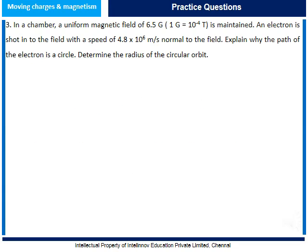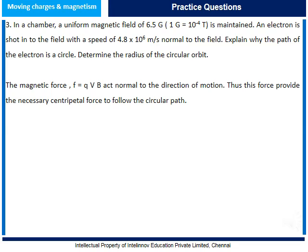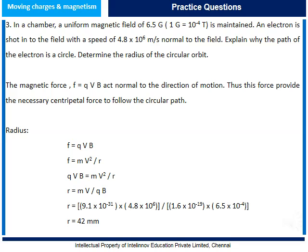Question 3: In a chamber, a uniform magnetic field of 6.5 G (where 1 G = 10⁻⁴ Tesla) is maintained. An electron is shot into the field with a speed of 4.8 × 10⁶ m/s, normal to the field. Explain why the path of the electron is a circle and determine the radius of the circular orbit. The magnetic force F = qvB acts normal to the direction of motion; thus this force provides the necessary centripetal force for circular motion. We know F = qvB and also F = mv²/r. Setting these equal: qvB = mv²/r, therefore r = mv/(qB). Substituting relevant values, we get the radius equal to 42 mm.